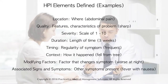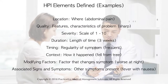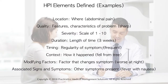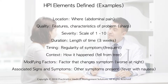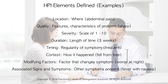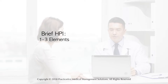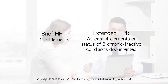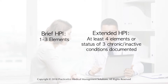Please review the following definitions of each HPI element. A brief HPI consists of one to three elements, and an extended HPI consists of at least four elements, or the status of three chronic or inactive conditions.